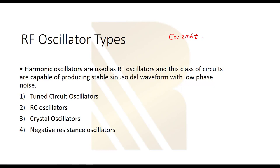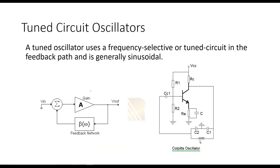Let's talk about harmonic oscillator types. There are four types of tuned circuit oscillators: RC oscillators, crystal oscillators, and negative resistance oscillators. I'm going to remove RC and crystal oscillators from the list because they are operating at lower frequencies, sometimes up to 10 MHz. We are talking about RF oscillators, so we really need fast oscillators. So I'm going to pick tuned circuit oscillators and negative resistance oscillators.